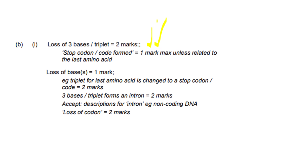The mark scheme also clarifies: if you mention stop codon or codon formed without relating it to a missing amino acid, you only get one mark maximum. 'Loss of bases' alone scores only one mark — you need to specifically say three bases or a triplet. However, if you say the triplet for a particular amino acid is changed to a stop codon, that scores two marks. If you put 'three bases or the triplet forms an intron' or non-coding DNA, that also scores two marks, since mutations in introns are silent. Loss of a codon also scores two marks, as codon indicates a triplet of bases.